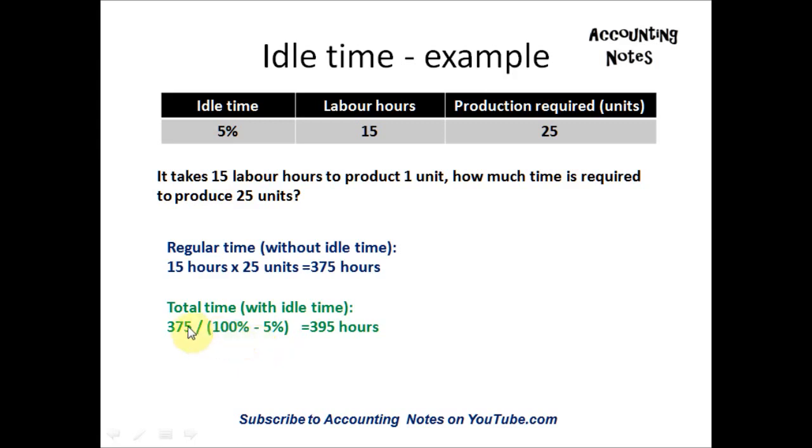So you take 375 divided by 95% to get a total time of 395 hours. That includes the idle time. So you need 395 hours to produce 25 units.